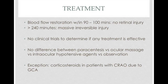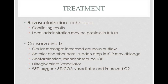As far as treatments go, unfortunately there are no clinical trials that determine if one treatment is more effective. Some of the more routine procedures — like ocular massage, paracentesis, and intraocular hypotensive agents — have not shown benefit compared to observation. However, one exception is patients who have giant cell arteritis, because they do show improved outcomes with corticosteroids. Some treatments still in the works are revascularization techniques, but the data is conflicting. Local anticoagulation to dissolve the clot is possible in the future, but right now the risk of bleeds elsewhere is too high for routine use.